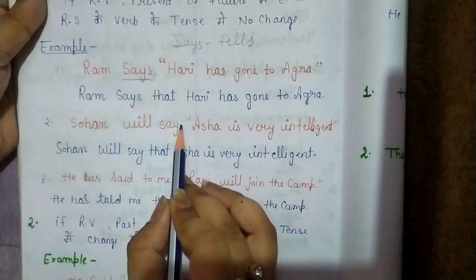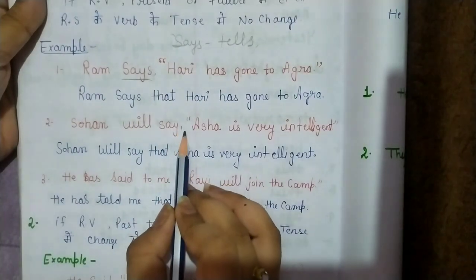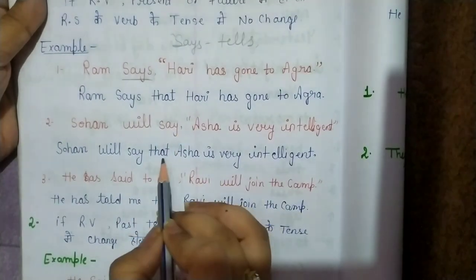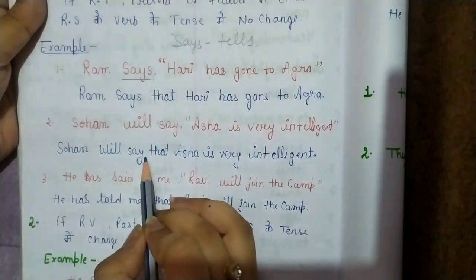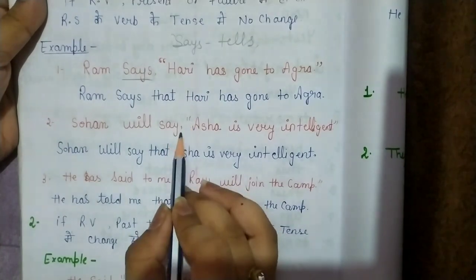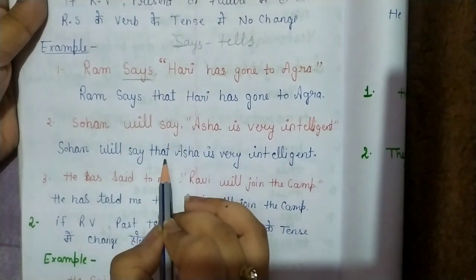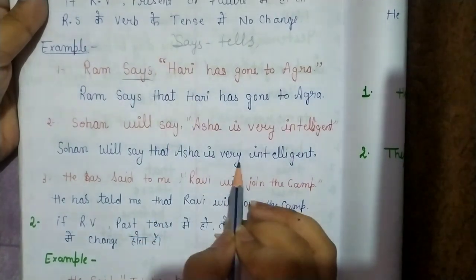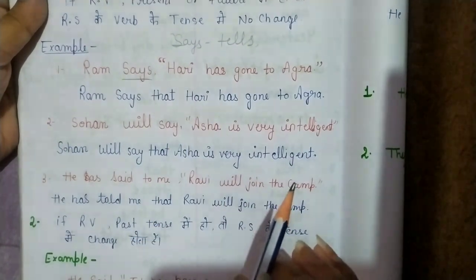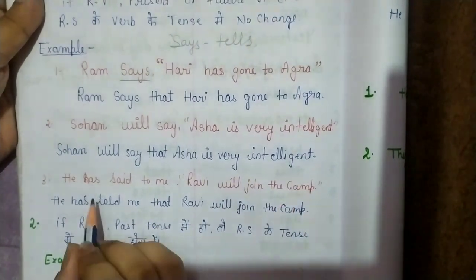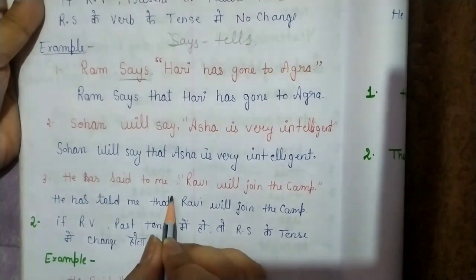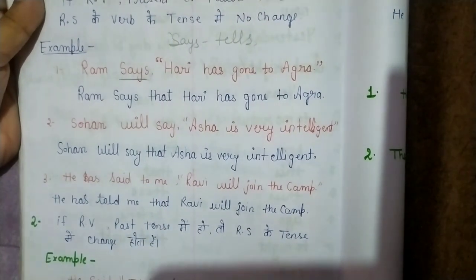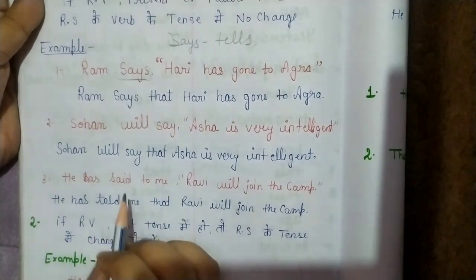Since there is no object, 'will say' remains as is. The answer will be: Sohan will say (inverted comma) that — Asha is very intelligent. There is no change because the reporting verb is in future tense. Let's see another example.